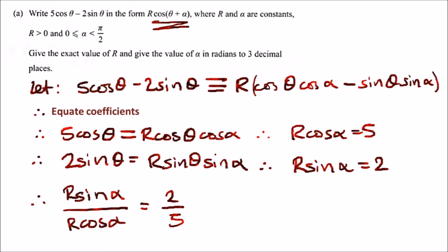Make sure your calculator is in radians and simply take tan inverse of 2/5, which gives you 0.381 radians. That's it for α.